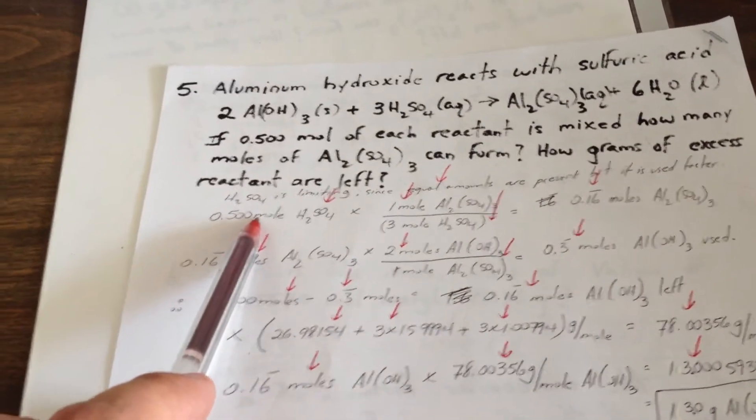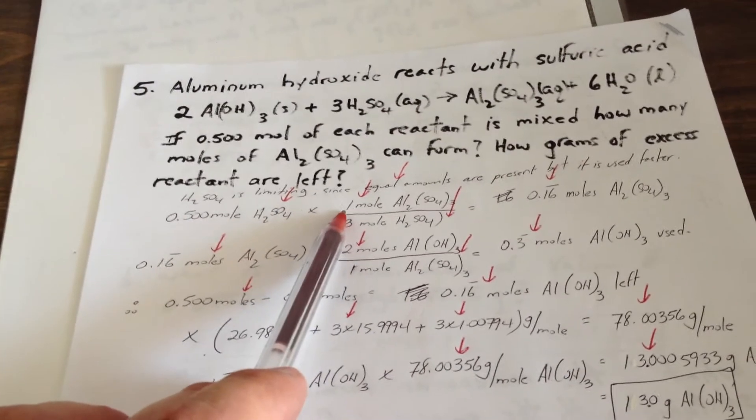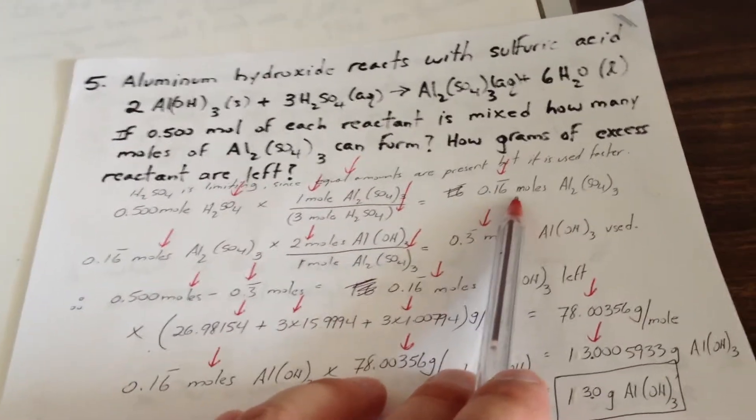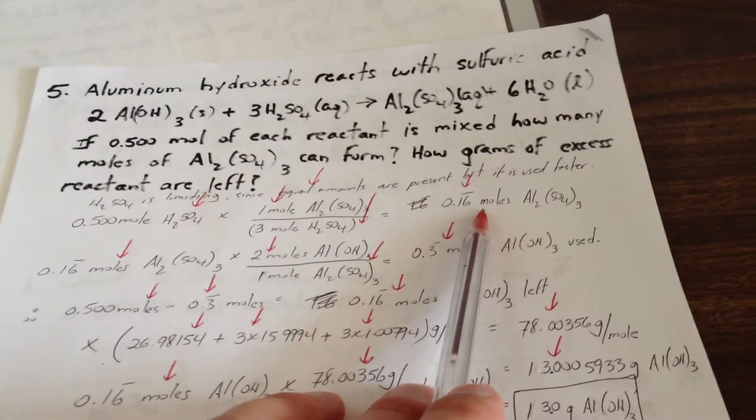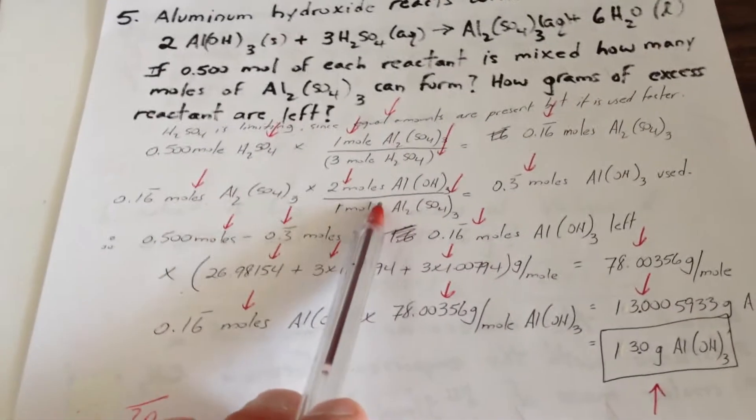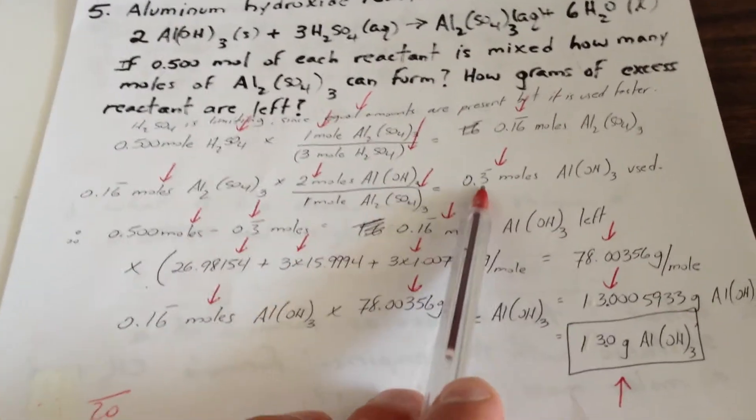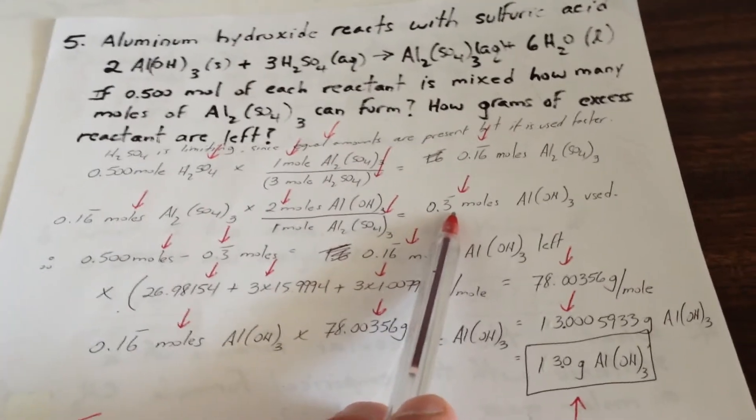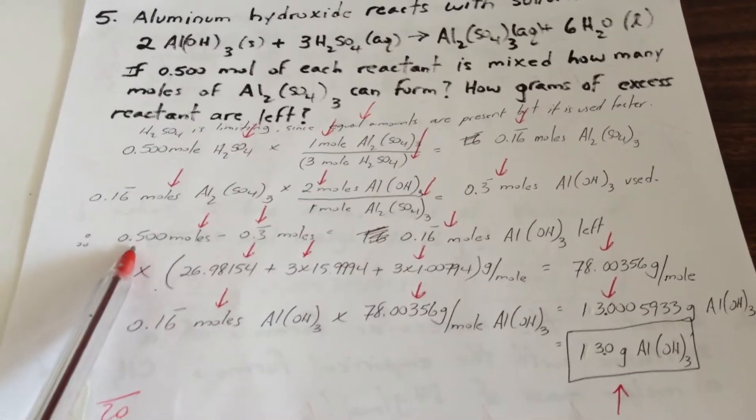0.5 moles of sulfuric acid. The stoichiometry between aluminum sulfate and sulfuric acid is 1 to 3. So that predicts that we will generate 0.16 recurring moles of aluminum sulfate. And starting from 0.16 moles of aluminum sulfate, we can back calculate to find out that it will use 0.3 moles of aluminum hydroxide. And we subtract that 0.3 moles of aluminum hydroxide from the 0.5 moles that are present.